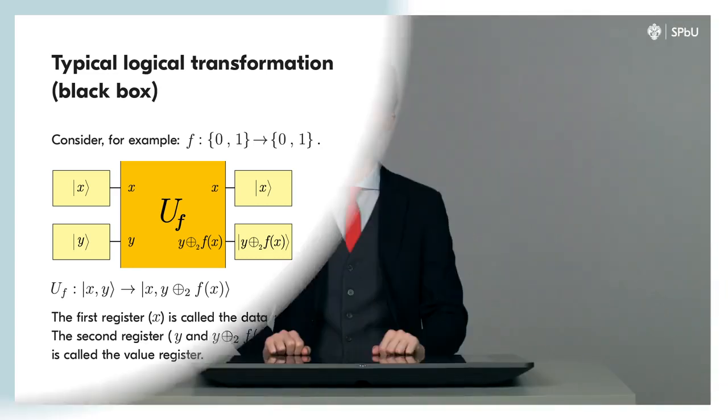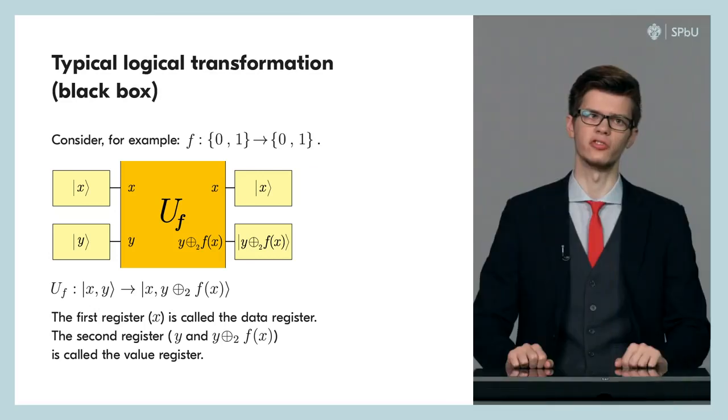The first register, that is here the x qubit, is usually called data register and the second register, here it is the second qubit, is called value register. The value register is usually equals zero at the input and thus it corresponds to the value of f(x) at the output.